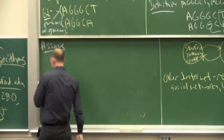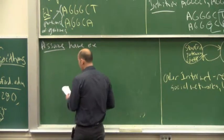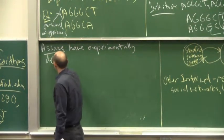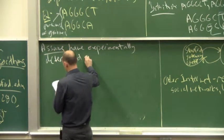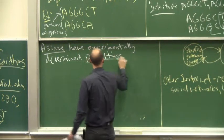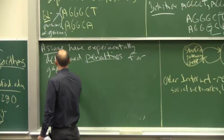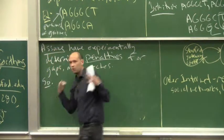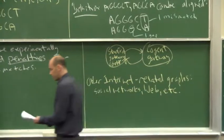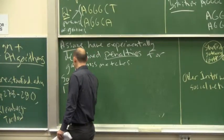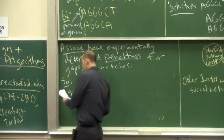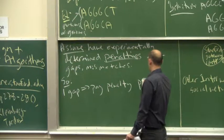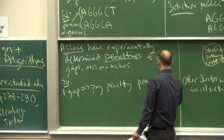So in addition to the two strings, we will assume that through experimentation, we've experimentally determined penalties for gaps and mismatches. So now, you as the algorithm designer will simply be told, as part of the input, that any time you use a gap in one of your alignments, it's going to cost you something like five. I'll abstractly write pen-subscript-gap, but this would be some number like five — five bucks a gap.